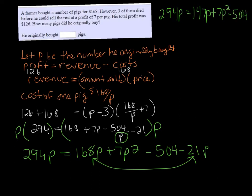Now we have a quadratic equation, and in order to solve that, we need to set one side equal to zero. So I'm going to subtract the $294P from both sides because that would be the easiest way to do that.